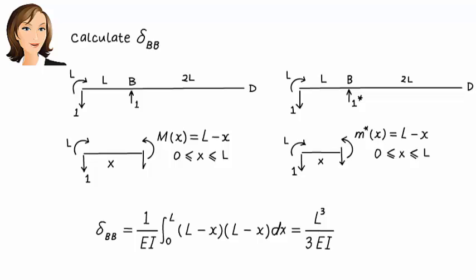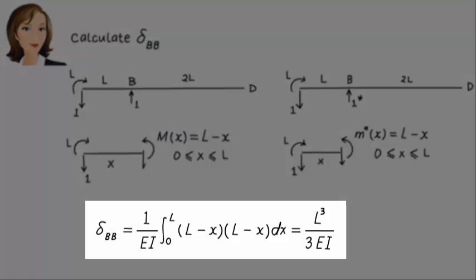Since the unit load and the virtual unit load are applied at the same point and in the same direction, M and M star are going to be the same. Here is the bending moment equation, and here is the equation for delta BB.